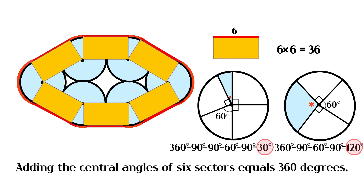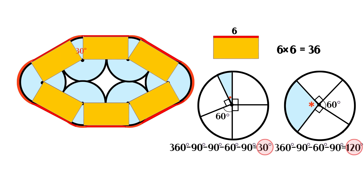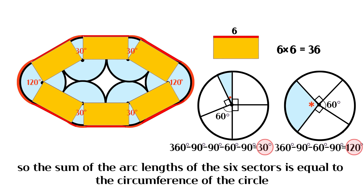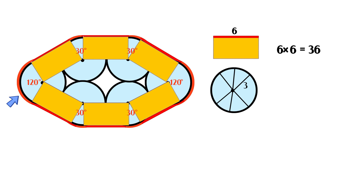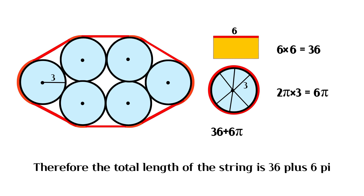Adding the central angles of six sectors equals 360 degrees. So the sum of the arc lengths of the six sectors is equal to the circumference of the circle.